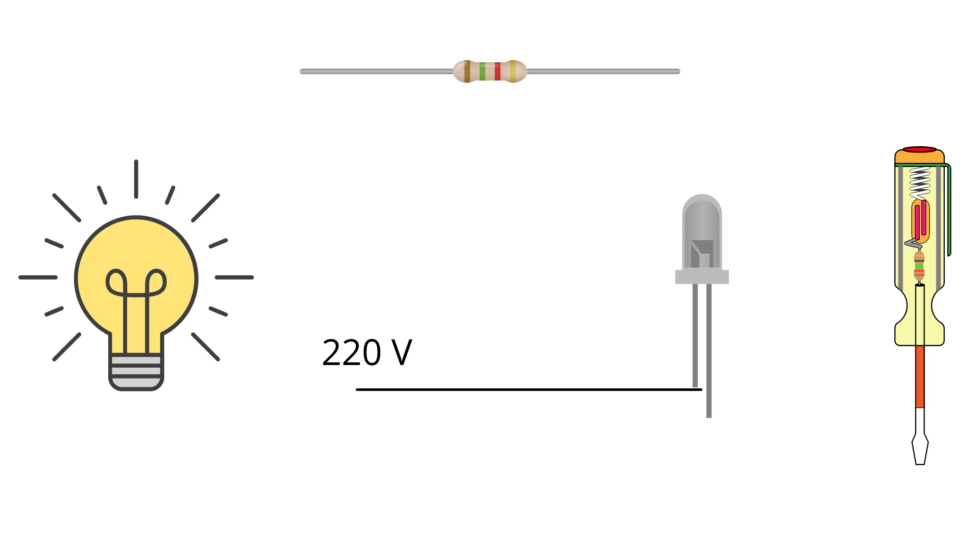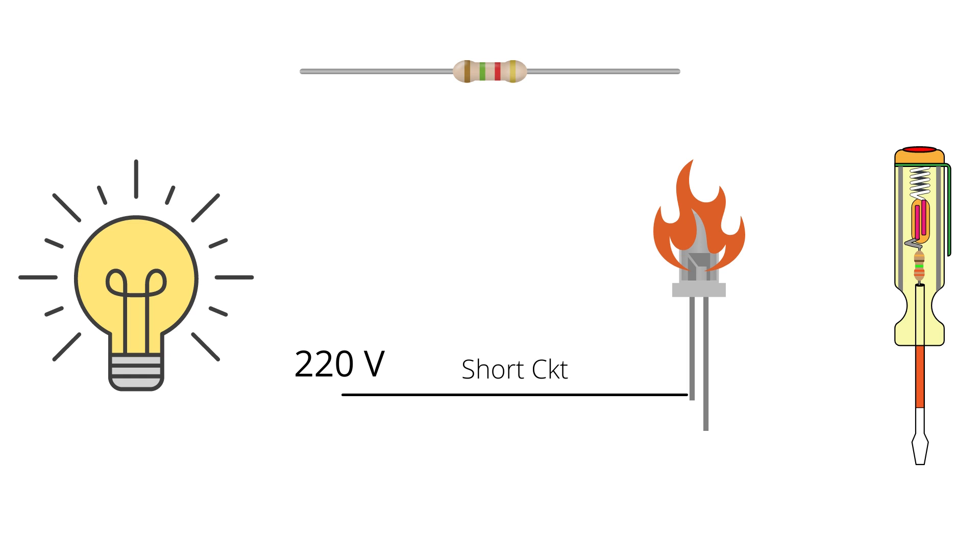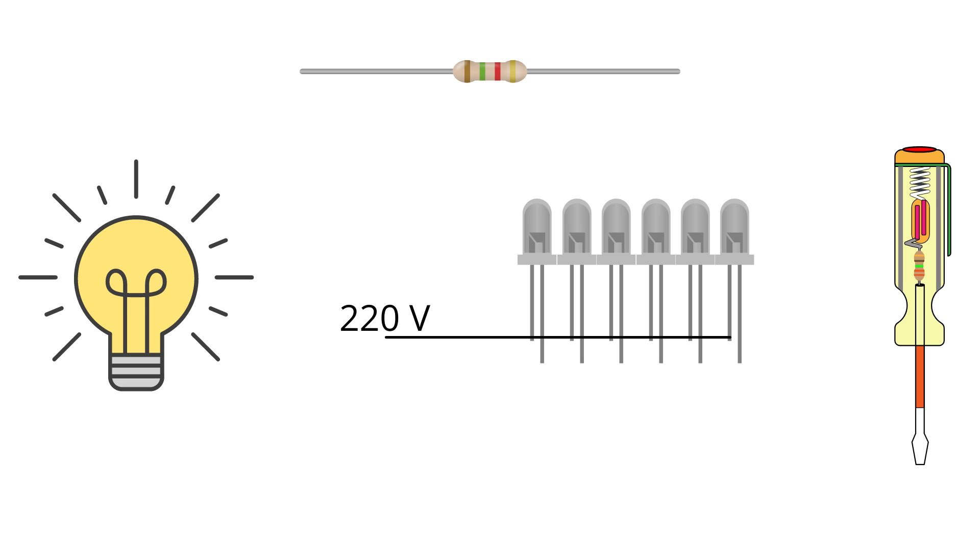There would also be a possibility of a short circuit. So instead we connect a string of LEDs together and give them a 220 volt supply. As a result, there is some voltage drop in every one of those LEDs, which allows each LED to glow without getting damaged.